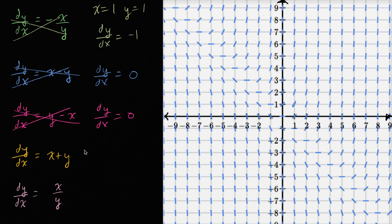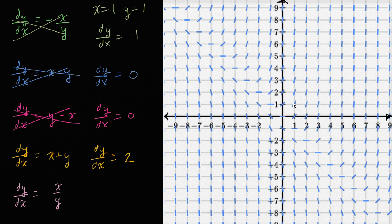Now here we have x plus y. So when x is one and y is one, our derivative of y with respect to x is going to be one plus one, which is equal to two. Now this looks interesting — it looks like this slope right over here could be two. This looks like one, this looks like two. I want to validate some other points, but this looks like a really good candidate.